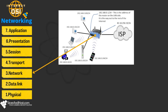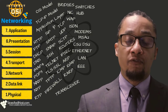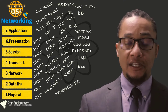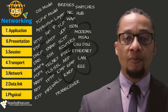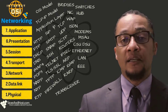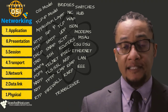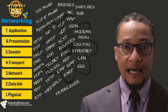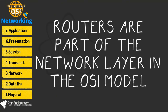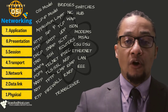The network layer also translates logical network addresses to physical addresses, such as a device name to a MAC address. It determines the routes for sending data efficiently over the network and takes care of network problems such as data congestion and data loss. The network layer converts data frames received from the data link layer into packets and updates higher layers with details on how data reaches its destination. Devices like routers reside over the network layer.